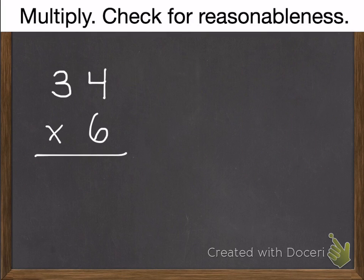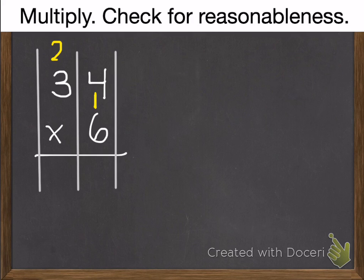My second example, I have 34 times 6. So once again, I really don't need to be drawing those pictures anymore, hopefully. So I have my 1's. I have 6 times 4 1's, which is 24 1's. But I can't fit 24 in my 1's. So I'm going to have to put 20 of those into my 10's. And if I have 20, that is 2 10's. Then it leaves me with my 4 1's.